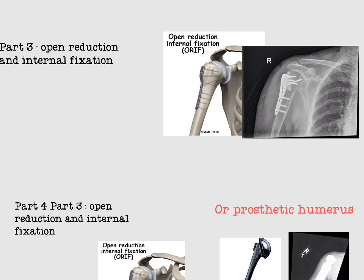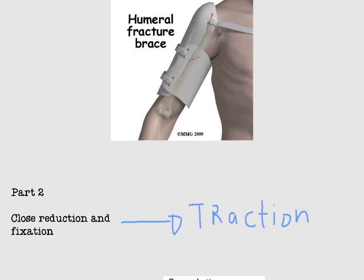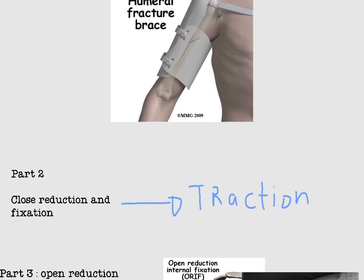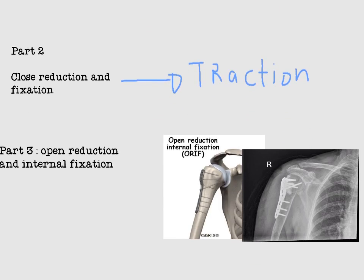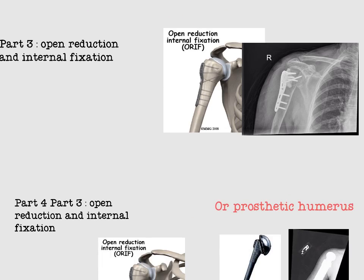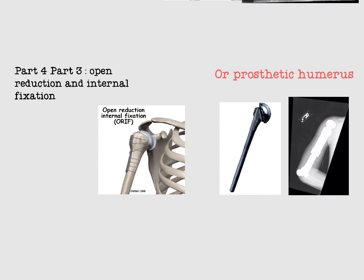In part three, closed reduction is not adequate; open reduction and internal fixation is required, as the three fragments cannot be managed closed. In part four, open reduction and internal fixation is also performed as in part three, and if this fails, a prosthetic humerus replacement is performed.